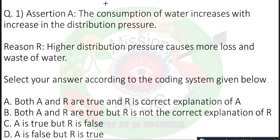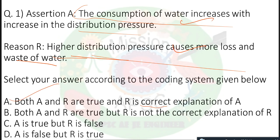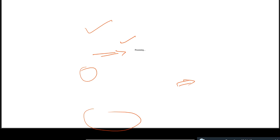So the statement: 'the consumption of water increases with increase in the distribution pressure' and 'higher distribution pressure causes more loss and waste of water' — A is correct and R is the correct explanation, because higher pressure causes pipe leakage, loss and waste of water, ultimately increasing water consumption. So both A and R are true and R is the correct explanation of A.